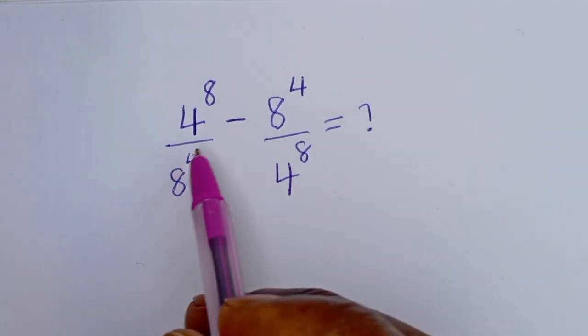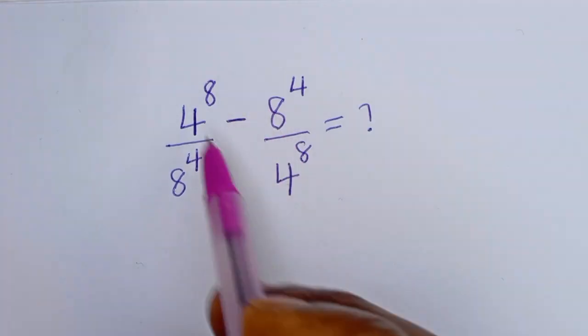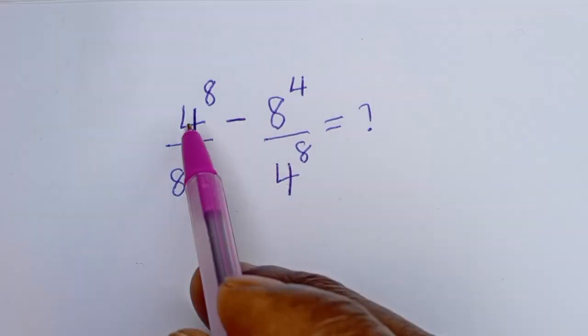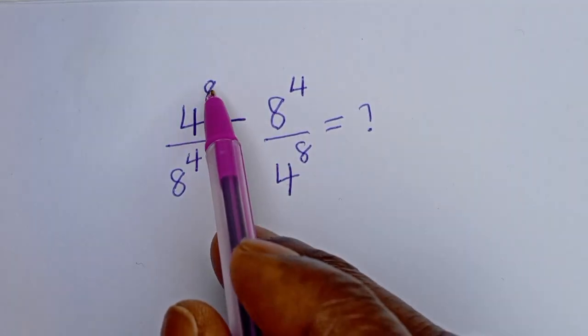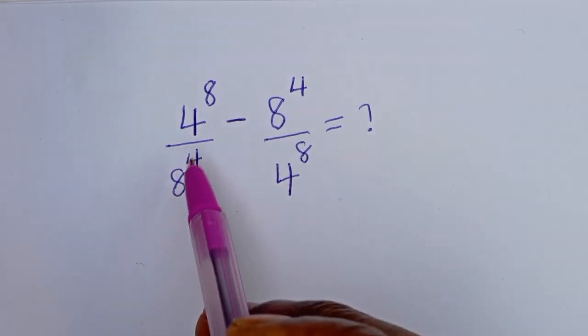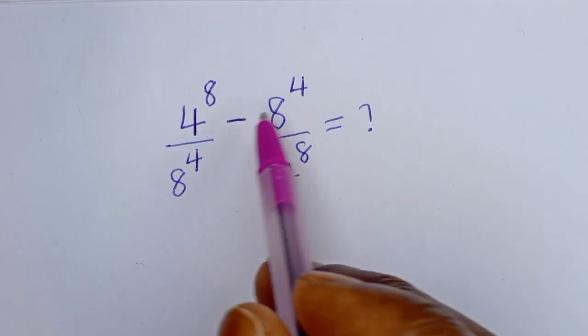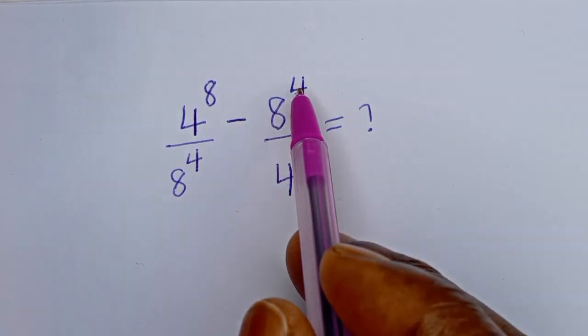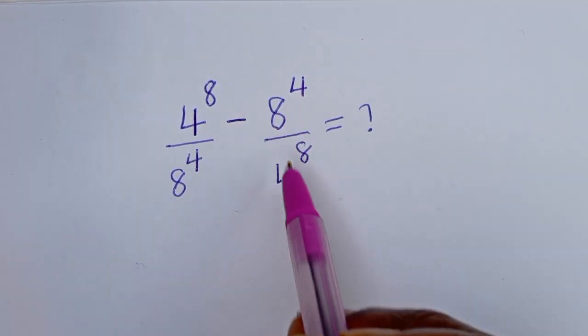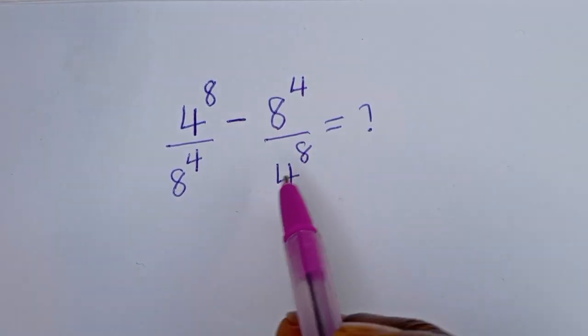Hello, you are welcome. How to simplify this nice math problem? 4 to the power of 8 divided by 8 to the power of 4, minus 8 to the power of 4 divided by 4 to the power of 8.